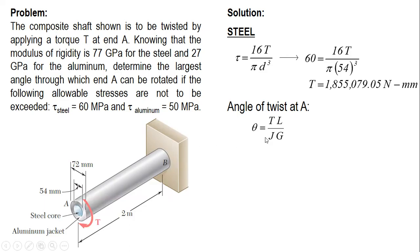The modulus of rigidity of steel is 77 GPa. We have the resisting torque. The length is 2 meters converted to millimeters, so times 1000. Then we have polar moment of inertia and modulus of rigidity.